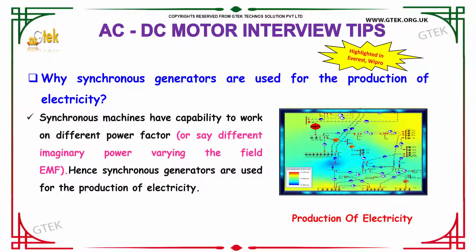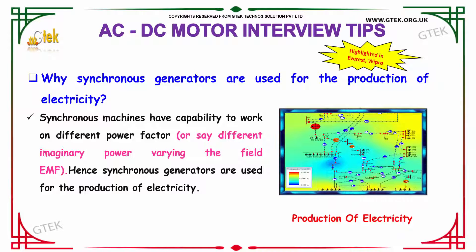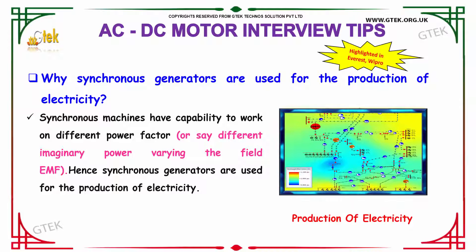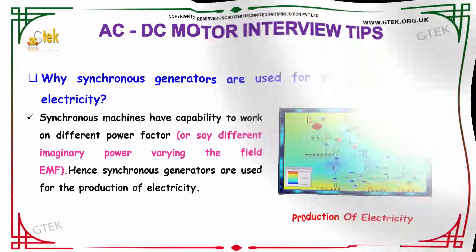Why are synchronous generators used for the production of electricity? Synchronous machines have the capability to work on different power factors. We can say different imaginary power varying with the field, that is in terms of EMF — EMF is nothing but electromotive force. Hence the synchronous generators are used for the production of electricity.